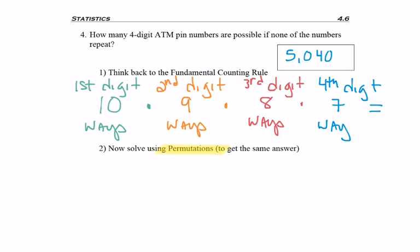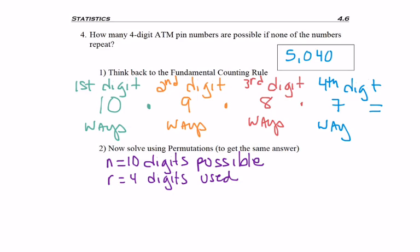But if you think about it, this problem could actually be used as permutations. Think of permutations as we have a set of ten stickers, and we're only choosing four of them. So N equals the ten digits possible, or think of it as my ten stickers. R equals the four digits that we're going to use. And so if I use the NPR button with the ten choose four on my calculator, I get 5,040, the same answer I got the other way. So as always with math, there's more than one way to solve a problem.